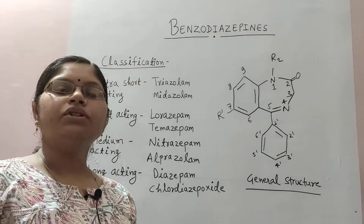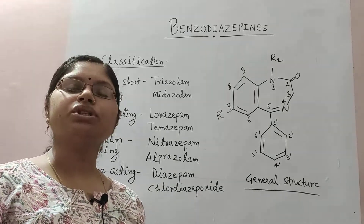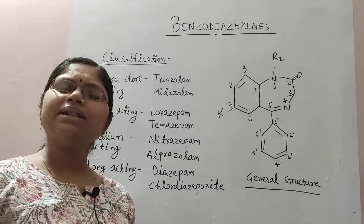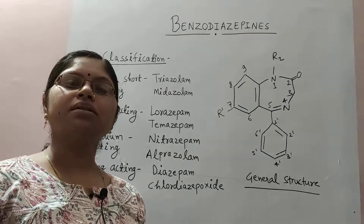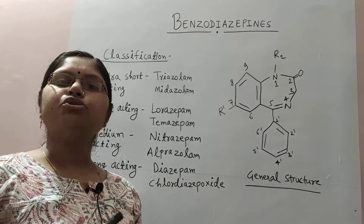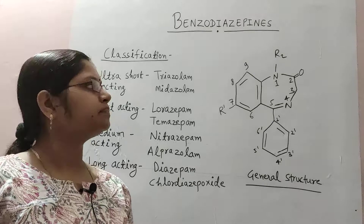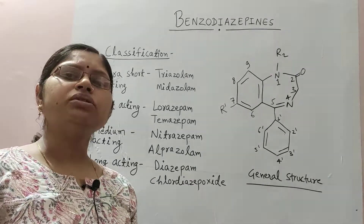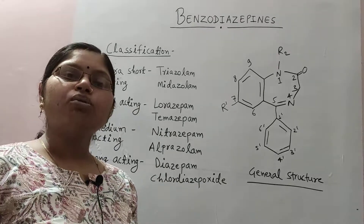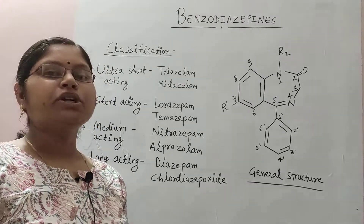Benzodiazepines are drugs which were introduced in the year 1960, and after their introduction they replaced the drug barbiturates. They replaced barbiturates because they have a high therapeutic index, they do not affect the respiratory system and CVS functions, and also Flumazenil is a drug which acts as an antagonist for benzodiazepines and is used in benzodiazepine toxicity.